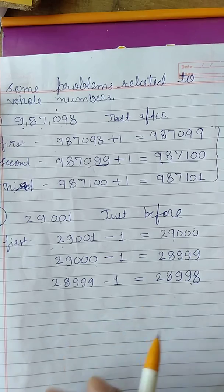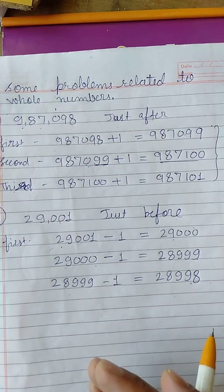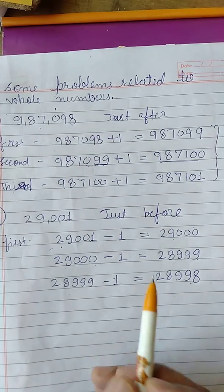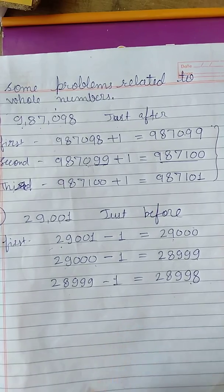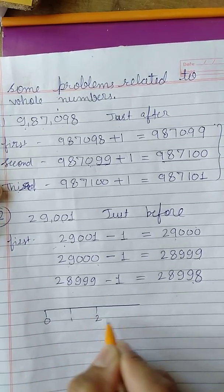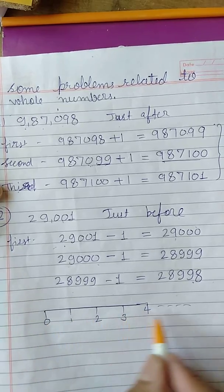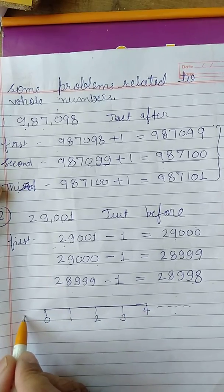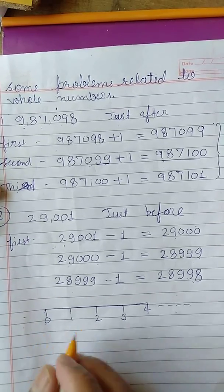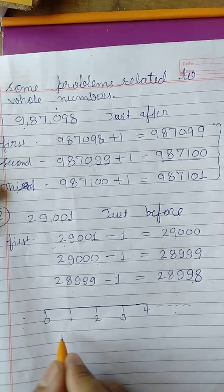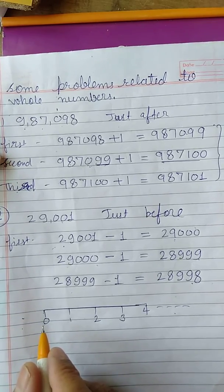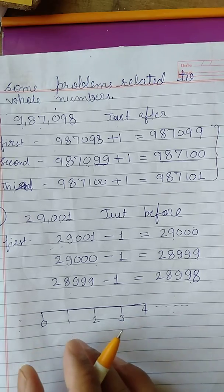Sometimes it is asked: what will be the predecessor of whole number zero? If we are talking about whole numbers only, whole numbers start from zero: 0, 1, 2, 3, 4 and so on. Before zero there is no whole number, so the predecessor of whole number zero does not exist.